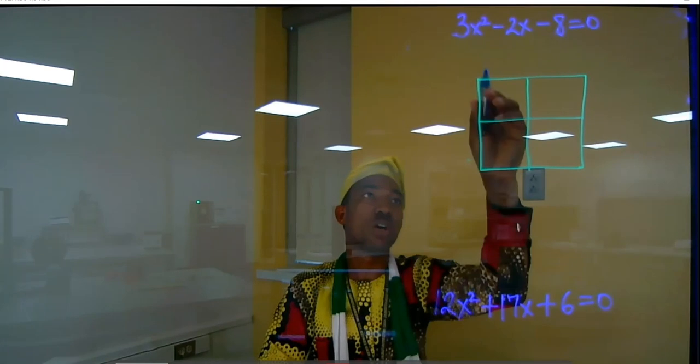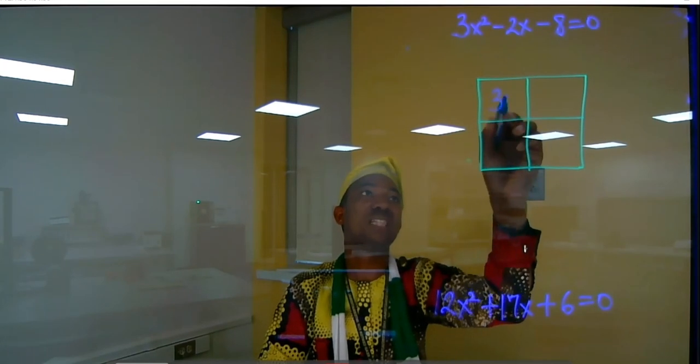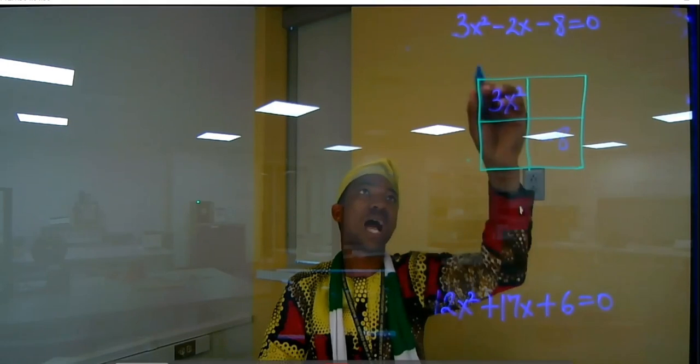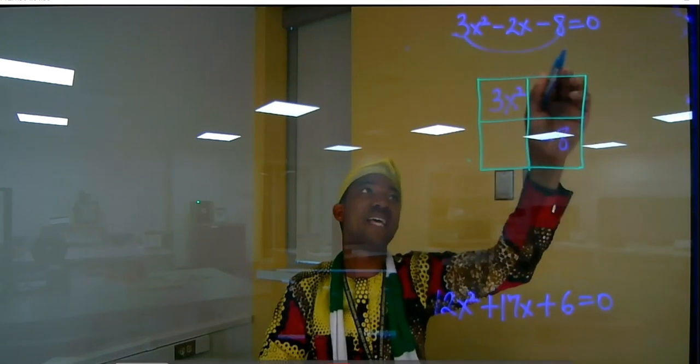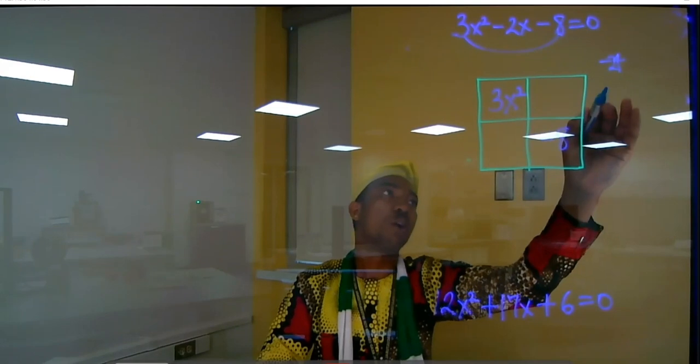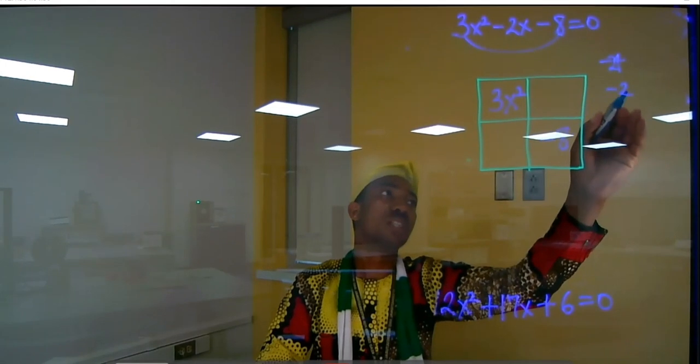Using this method, I'm going to put this 3s² here, then this minus 8 here. So I'm looking for when I multiply ac, that will give me minus 24. Then, of course, my b is what? It's minus 2.